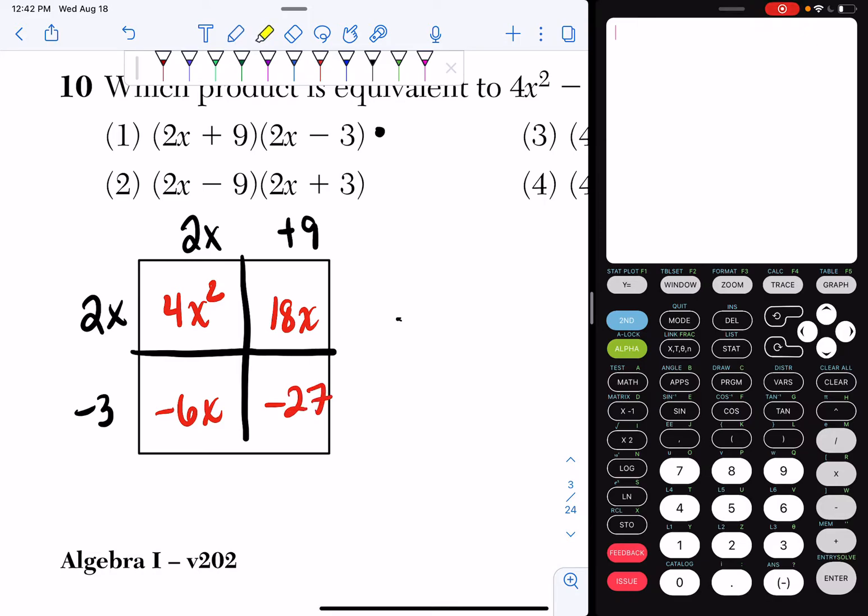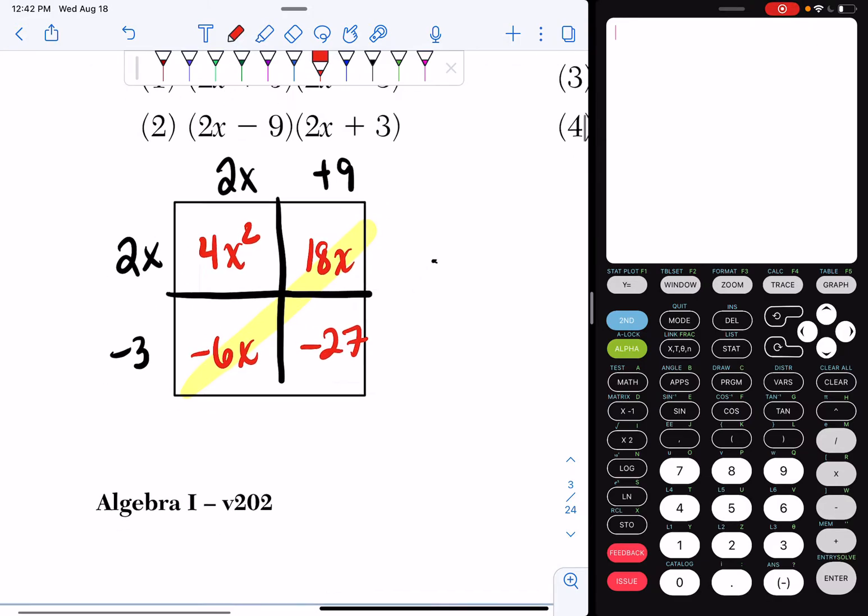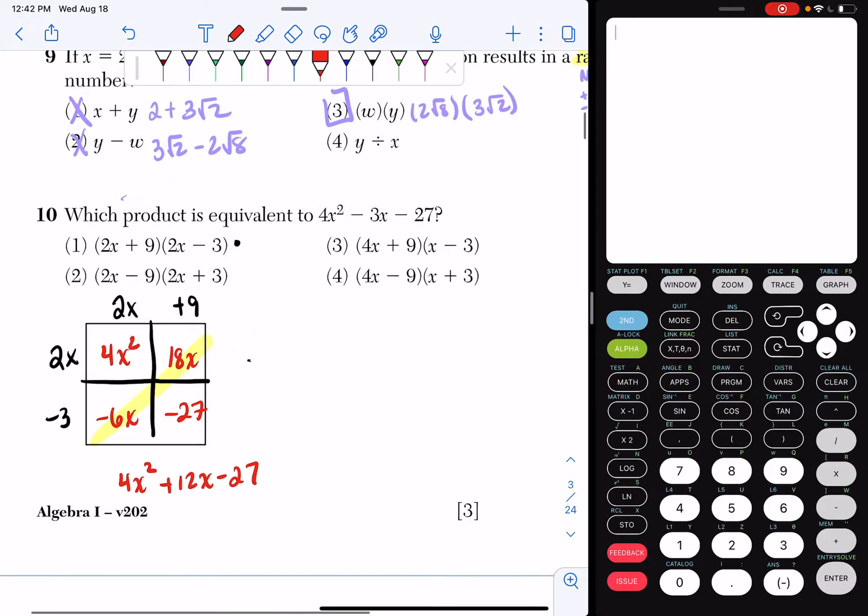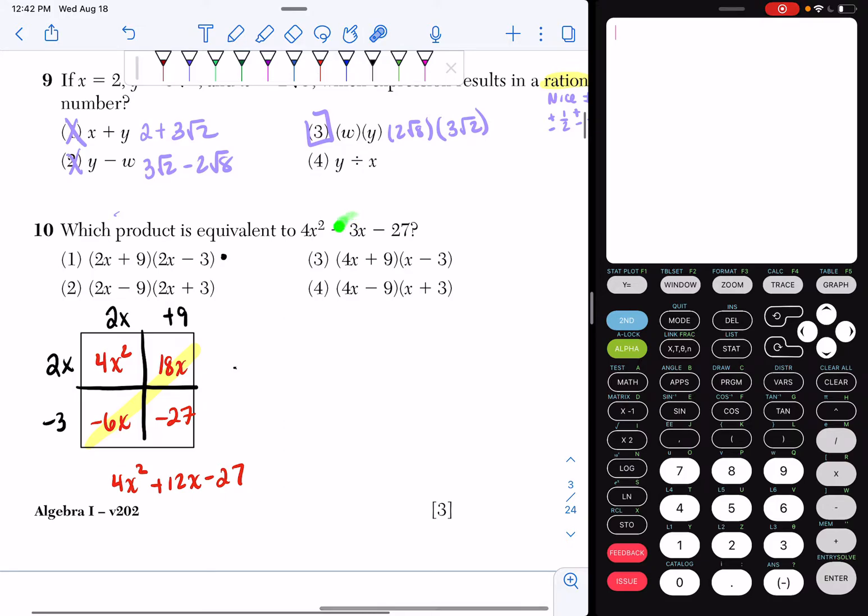I combine my like terms on the diagonal, and I get 4x squared. Negative 6x plus 18x is a positive 12x. And then I get my minus 27. If I look, I wanted a minus 3x. So it can't be choice one.